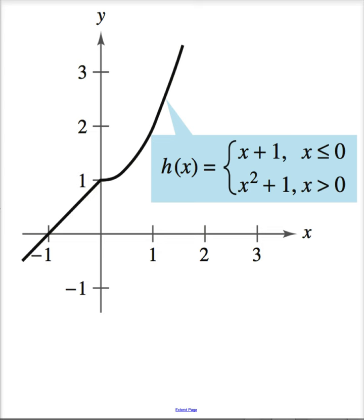This function right here, whenever you have piecewise functions, you're always going to need to check at this point. The limit as x approaches 0, let's take it from the left, is equal to 1. The limit as x approaches 0 from the right is x squared plus 1.